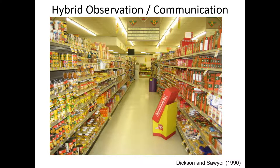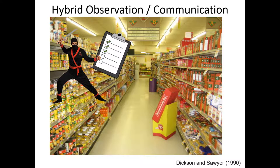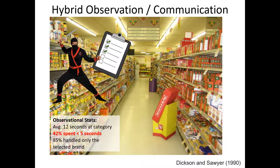Here's an example of a hybrid observation and communication-based marketing research study from Dixon & Sawyer in 1990 in the Journal of Marketing. Marketing researchers were hired to act as secret agents inside a grocery store, pretending to stock shelves. As people approached a particular section of the grocery store, the observation occurred. The marketing researchers tracked the number of different products that people touched, how much time they stood in front of a shelf before making a purchase decision, and ultimately which product they selected. For the observational component, researchers learned that on average people spent about 12 seconds at the particular product category, but 42% of them spent less than 5 seconds, and 85% of individuals only handled the brand they actually purchased.